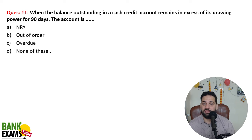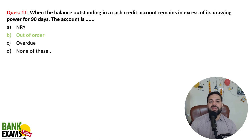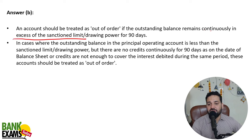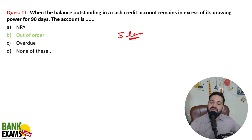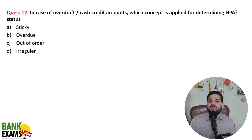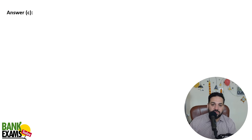When the balance outstanding in a cash credit account remains in excess of its drawing power for 90 days, the account is 'out of order.' In cash credit and overdraft accounts, the NPA concept is not used — we call it an out of order account. An account should be treated as out of order if it remains continuously in excess of the sanctioned limit for 90 days.